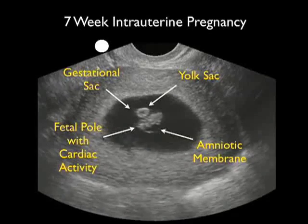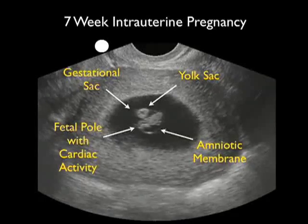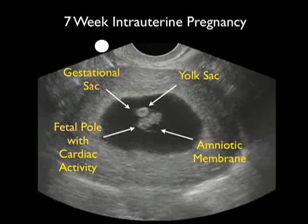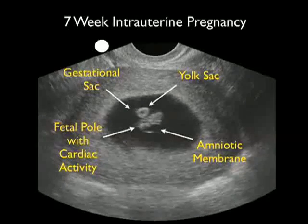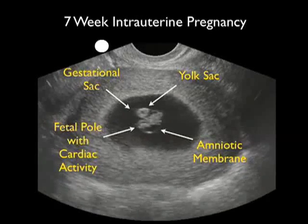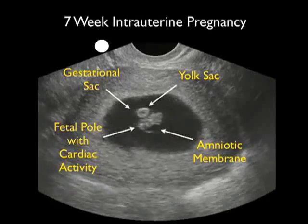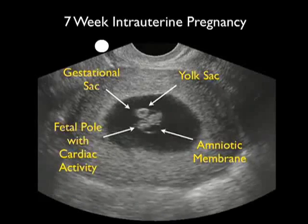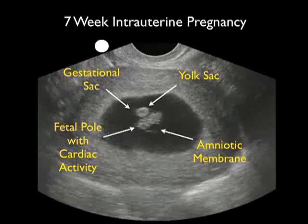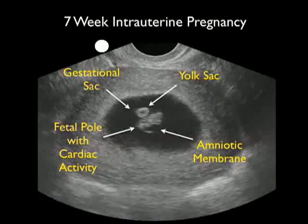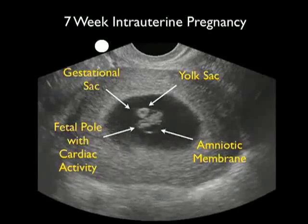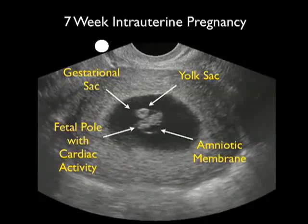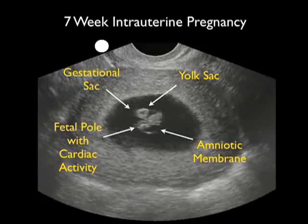Here's another important finding on this ultrasound: the amniotic membrane billowing out from around the fetal pole. Eventually, the amniotic membrane will plaster down on the margins of the gestational sac to form the amniotic cavity in which further growth of the fetus will occur.